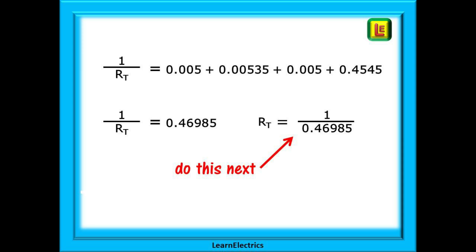We need to turn 1 over RT upside down to arrive at RT on its own. To do this we must put the 1 over the top of 0.46985 and now on the calculator divide 1 by 0.46985 and we have the answer 2.128 mega ohms. So our answer is A.